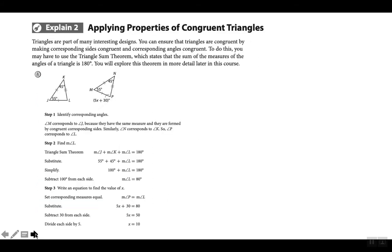These are also simple. Let's read the topic: 'Applying Properties of Congruent Triangles.' Triangles are part of many interesting designs. You can ensure that triangles are congruent by making corresponding sides congruent and corresponding angles congruent. To do this you may have to use the Triangle Sum Theorem, which states that the sum of the measures of the angles of a triangle is 180 degrees.